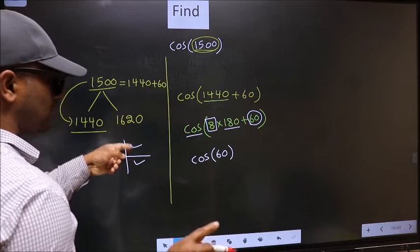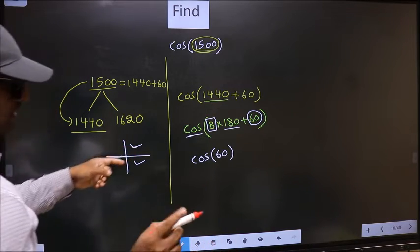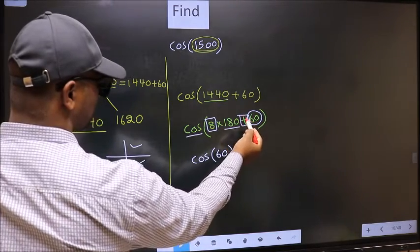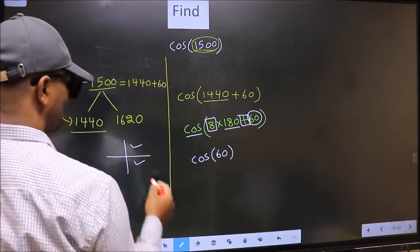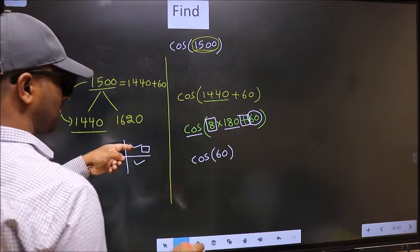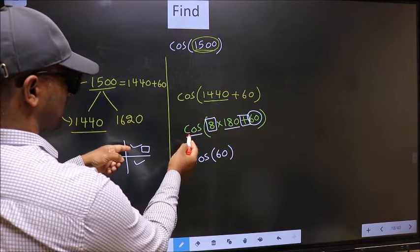So now to select the quadrant, we should look at this symbol. Here we have plus. That means the angle lies in the first quadrant. And in the first quadrant, cos is positive.